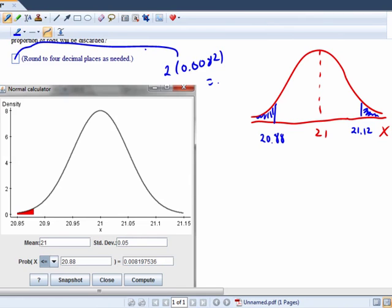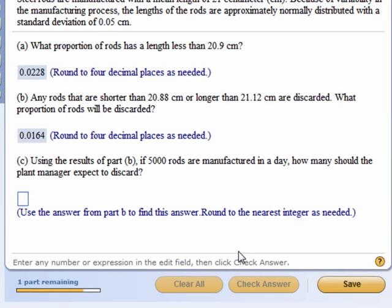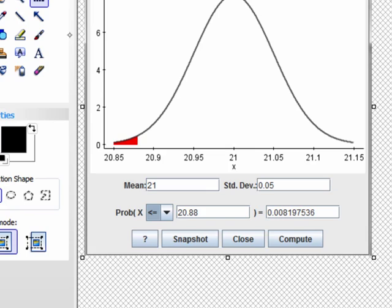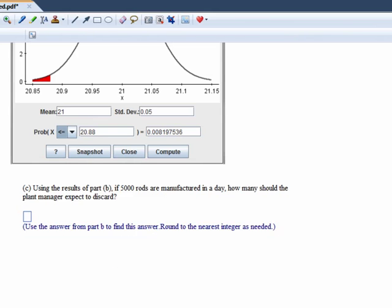Here, using the results of part B, if 5,000 rods are manufactured in a day, how many should the plant manager expect to discard? So now we sort of have a binomial situation going on because either we're going to get a success, meaning we discard, or we get a failure, meaning we don't discard.